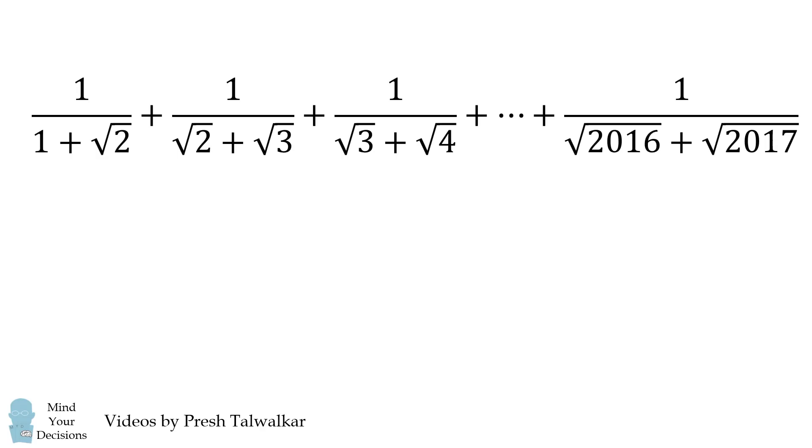We'll take a look at the series. The very first term can be rewritten as 1 over the square root of 1 plus the square root of 2. So a general term in the series will be 1 over the square root of k plus the square root of k plus 1. Let's analyze this term.